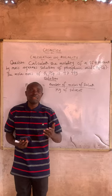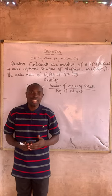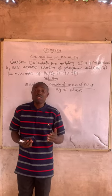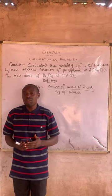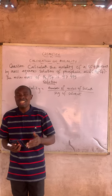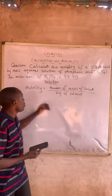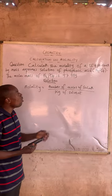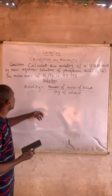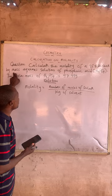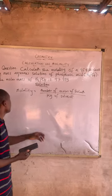Hello everyone, my name is Adrian Anney, the Bazoka Prophet. This is a continuation of our previous video, still on the calculation involved in molality. The question is: calculate the molality of a 35.4% by mass aqueous solution of phosphoric acid.